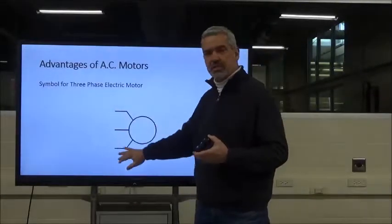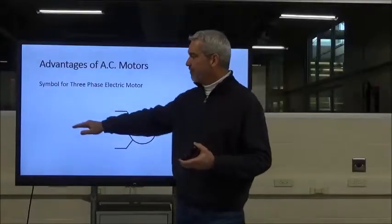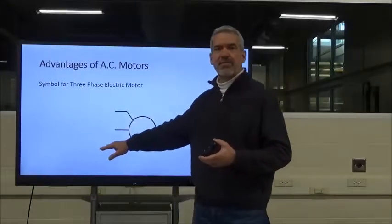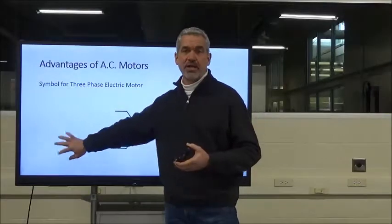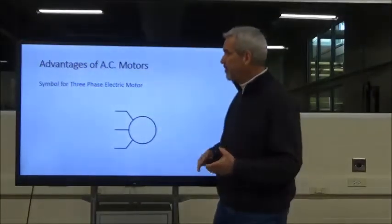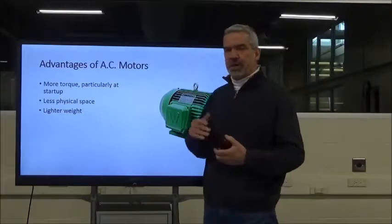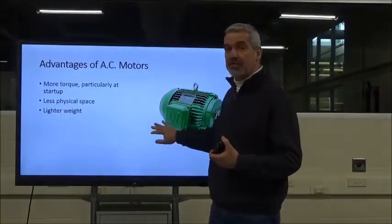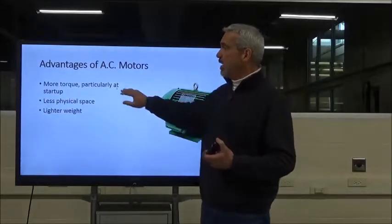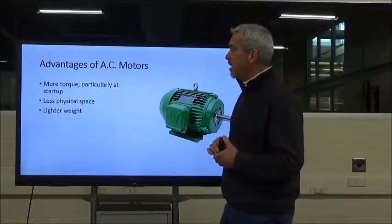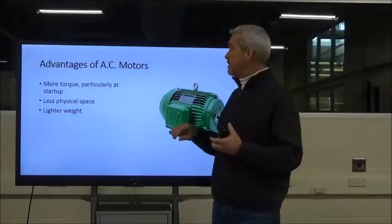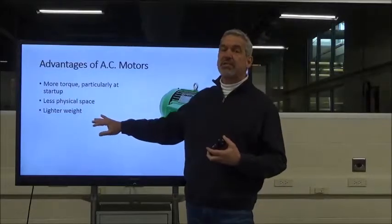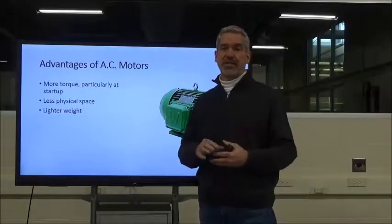This is the symbol for a three-phase motor. From our previous lecture, we had three dark lines feeding the three phases of voltage — L1, L2, and L3 — to our motor. We also talked briefly about the advantages of an AC induction motor, which we call squirrel cage motors. They have more torque, particularly at startup. They also take up less physical space — a 10 horsepower three-phase motor is much smaller than a 10 horsepower single-phase motor.